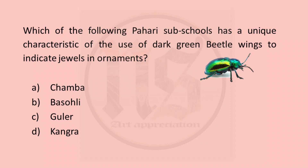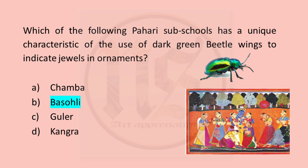Which of the following Pahadi sub-schools has a unique characteristic of the use of tar green beetle wings to indicate jewels and ornaments? For your convenience I have included the picture of a beetle — an insect generally seen in the Pahadi region. In the Pahadi region, the beetles are very large and sometimes have very shiny wings. Pahadi artists used these wings in the paintings. Recall the painting of Basoli — Krishna with Gopis — all the green jewels in the ornaments are actually beetle wings. So our correct answer is B, Basoli.